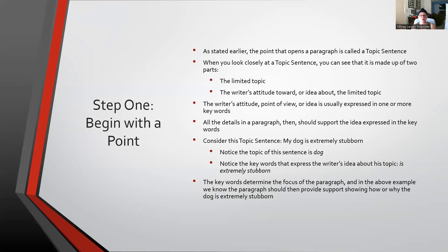The opening sentence of a paragraph is the topic sentence. If you hadn't picked up on it, the topic sentence is made up of two parts: the limited topic — meaning the focused topic — and the writer's attitude or point of view about that focused topic. That lets you know what they're going to do with that focused topic. That was one reason why the first paragraph was very successful — it was clear that the topic was how recent changes in society have weakened family togetherness. So we know what the focused topic is and what direction it's going to go in.